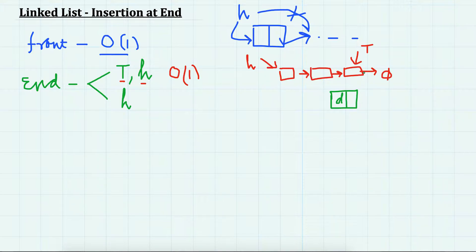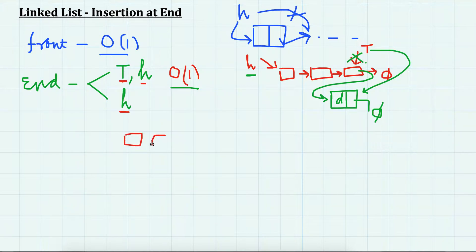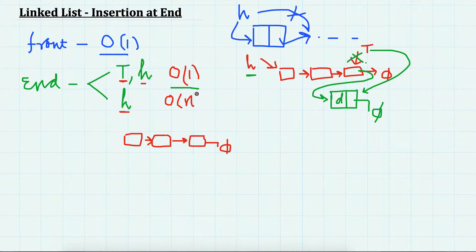For inserting a new node with a tail pointer, we create a new node, and since we have a reference to tail — which is the last node — we set its next to point to this new node. Then this new node becomes the new tail. Head will not be updated because head always points to the first node. This is again O(1) constant time. But if we are not allowed to keep a separate tail reference and just have head, it will be O(n), where n is the number of nodes in the list.